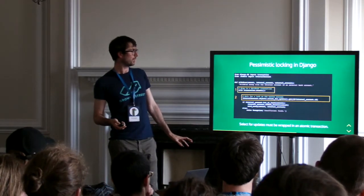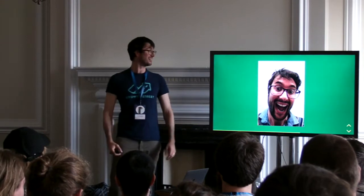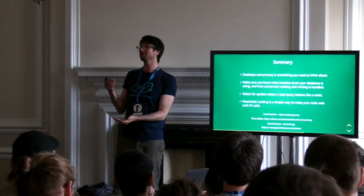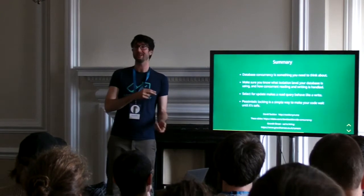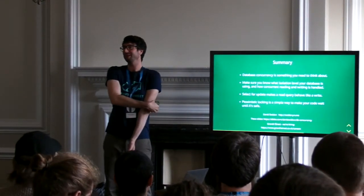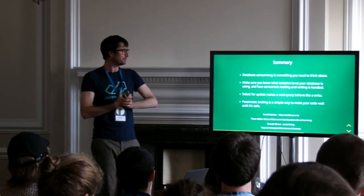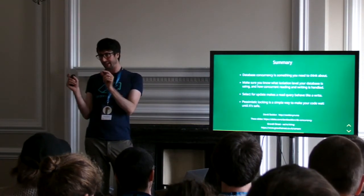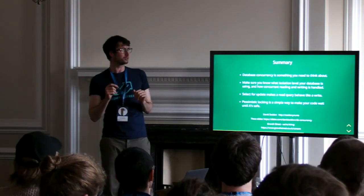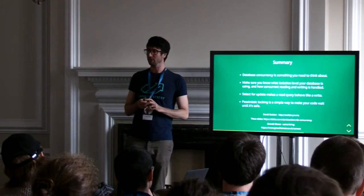To summarise: database concurrency is something you need to think about. There are lots of ways to approach this — the approach I've shown you is called pessimistic locking. You can also have optimistic locking, or put your database into serializable mode. Make sure you know what isolation level your database is in, and how concurrent reading and writing work at that level. Select for update makes a read query behave like a write query. Pessimistic locking is a simple way to make code wait until it's safe to proceed.